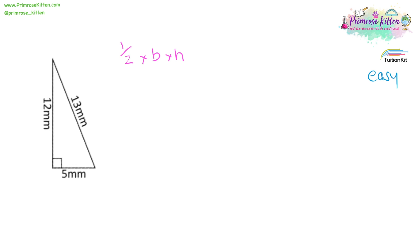Again, half times base times height. Base, height. So that is a half times 5 times 12, giving us 30 millimetres squared.